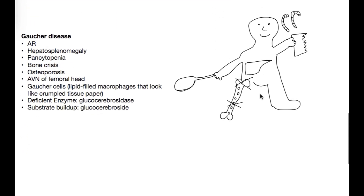Last on the list is Gaucher's disease. It's autosomal recessive because only Fabry's disease is X-linked recessive. To represent hepatosplenomegaly, I drew a liver on my person. For pancytopenia, I drew a pan in his hand. For bone crisis, I have X's drawn on the bone — you can see a femur drawn as a bone. For osteoporosis, I have little holes in the bone to remember the weakness. For avascular necrosis of the femoral head, I have an X drawn on the femoral head.